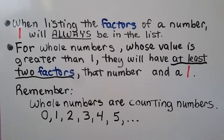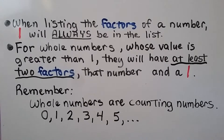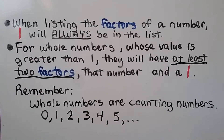When listing the factors of a number, 1 will always be in the list. For whole numbers whose value is greater than 1, they will have at least two factors: that number and 1. Remember, whole numbers are counting numbers like 0, 1, 2, 3, 4, 5. Any counting number whose value is greater than 1 will have at least two factors: that number and 1.